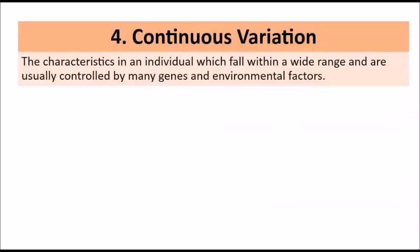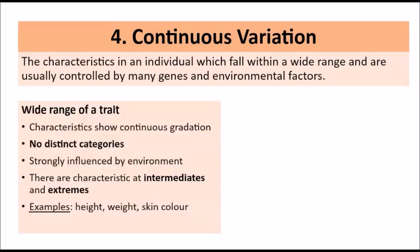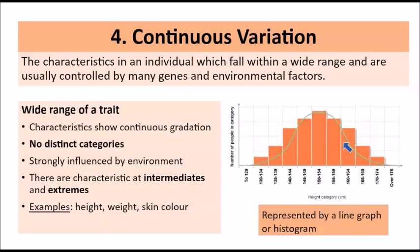Let's go on to look at continuous variation. In this case the characteristics in the individual fall within a wide range, and they're usually controlled by many genes and environmental factors. The characteristics will show a continuous gradation — there are no distinct categories — and the trait is strongly influenced by environmental factors. You have characteristics that would have intermediates and extremes. Common examples would be height, weight, and skin color, where you have a wide range of these particular characteristics.